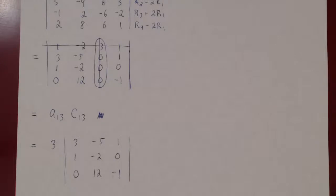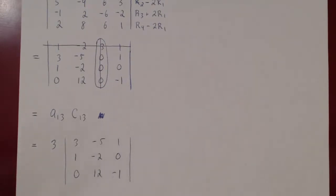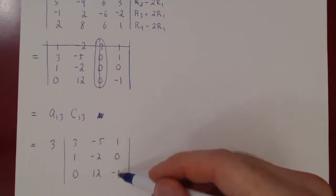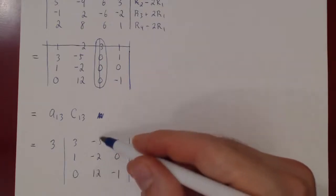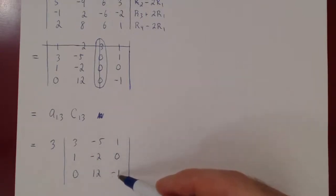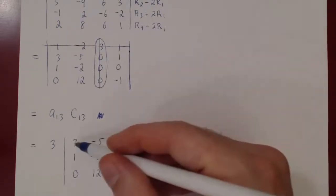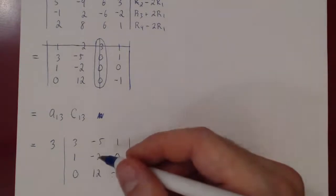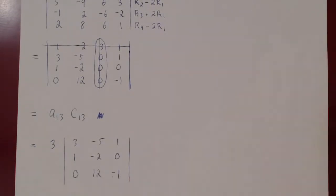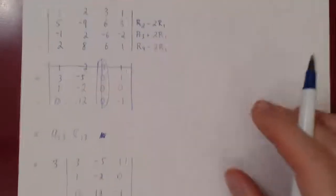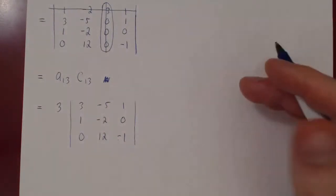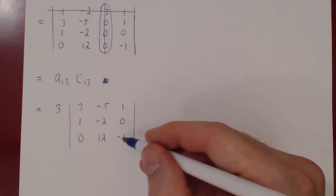If we introduce one more zero, we'll only have one cofactor to compute. There are several options: row 3 plus row 1 to make this entry 0, or column 2 plus 12 of column 3 to kill that entry. Just to demonstrate a column operation, we'll do column 2 plus 12 of column 3.